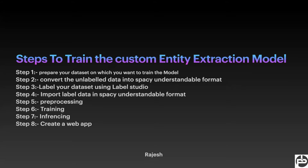I have already created the steps we have to follow. First, in order to build the custom entity extraction model, we have to prepare our dataset on which we will train our model. Second, convert our unlabeled data into a special format understandable by spaCy. Third, label your dataset using Label Studio. There are a lot of tools available — Prodigy is there but it's a paid tool; Label Studio and many more are there. You can also do the labeling manually.